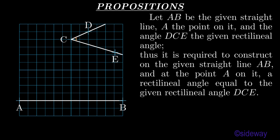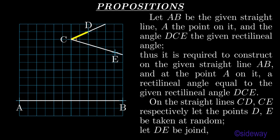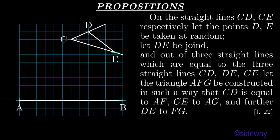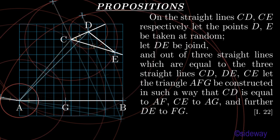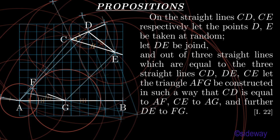Thus it is required to construct on the given straight line AB, and at the point A on it, a rectilineal angle equal to the given rectilineal angle DCE. On the straight lines CD, CE respectively, let the points D, E be taken at random. Let DE be joined. And out of three straight lines which are equal to the three straight lines CD, DE, CE, let the triangle AFG be constructed, in such a way that CD is equal to AF, CE to AG, and further DE to FG, by Book 1 Proposition 22.